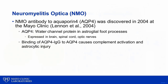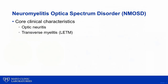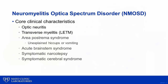Aquaporin-4 is a water channel protein expressed in the brain, spinal cord, and optic nerves, which are areas affected by NMO. Binding of the aquaporin-4 antibody to aquaporin-4 causes complement activation and astrocytic injury. Knowledge of the aquaporin-4 antibody expanded the phenotype of NMO beyond optic neuritis and transverse myelitis. This is now termed neuromyelitis optica-spectrum disorder, NMOSD, which also includes area postrema syndrome, where patients present with intractable nausea and vomiting from dorsomedullary lesions.